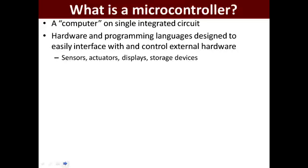Microcontrollers are designed to be an easy interface to external hardware. This can include things such as sensors — for instance, the microswitches and the photo transistors that you're using for your project — actuators such as motors and solenoids, displays such as the serial LCD you've used, and storage devices. You can also connect these up to external memory if you have data that you want to collect and store.